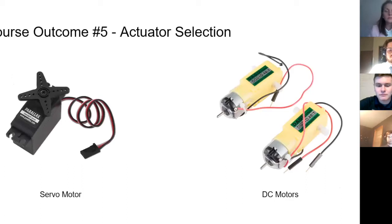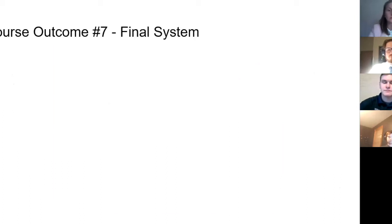When selecting actuators, we ended up selecting servo motor to enable a wall to move up and down inside the course, and then DC motors in order for the robot to actually move along the course as it was guided.